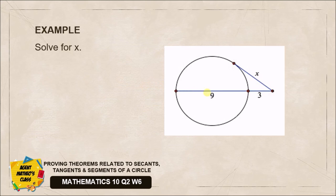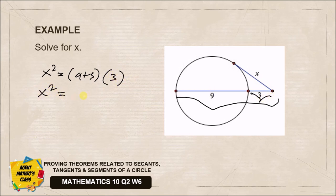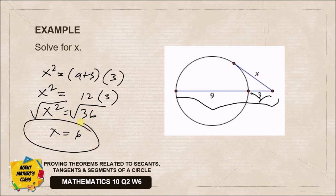We proved the third theorem, and that is supported by our example here. Once again, when you have the tangent segment and secant segment, we are going to square the tangent segment. You equate that by the whole part of our secant segment, that is 9 plus 3, then multiply that by the external part which is 3. So x squared equals 12 times 3, x squared equals 36. We are only getting the positive or principal root, so square root both sides, you'll have x equal to 6. That ends our third theorem. Let us try to prove our next theorem for the next video lesson.